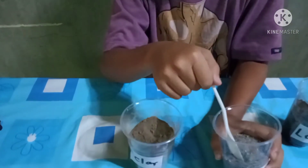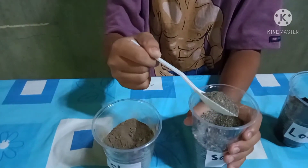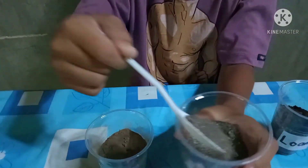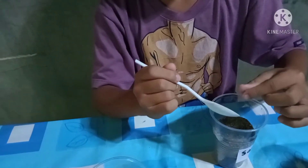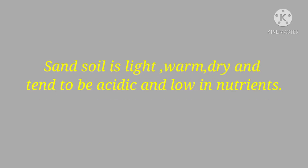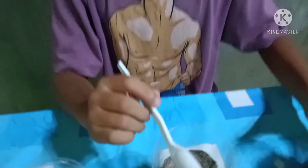Next is sand soil. This is what it looks like when it is dry. As you can see, when you touch it, it feels rough. Sandy soil is light, warm, dry, and tends to be acidic and low in nutrients. It is not a good soil for growing plants because it does not hold water well.